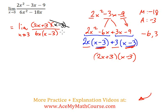Great. Now I can cancel these two out. So I just get the limit as x approaches 3 of 2x plus 3 over 6x. And now I can actually plug in the 3 because I no longer get a 0 in the denominator.